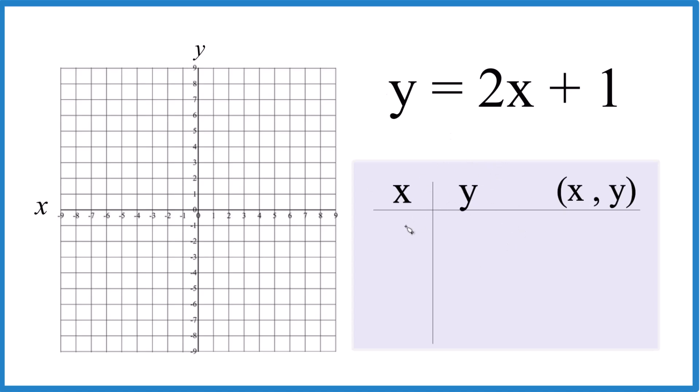I'll just make some values up for x. I like to start with 0 here, because 2 times 0 is 0, and 0 plus 1 is just 1. How about 1? 2 times 1 is 2, plus 1, that's 3. And how about negative 1? 2 times negative 1 is negative 2, and negative 2 plus 1 is just negative 1.